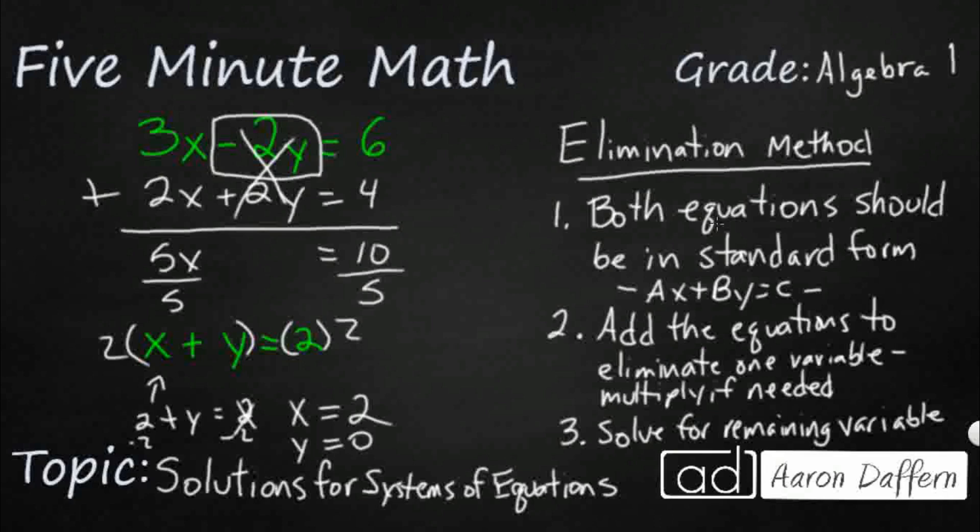Let's put it into this first one just to double check. So it's going to be 3x minus 2y equals 6. That x is equal to 2. So 3 times 2 minus 2y equals 6. That's 6 minus 2y equals 6. Let's get rid of 6 from both sides. So it's negative 2y equals 0. Divide by negative 2. I'm still going to get 0.